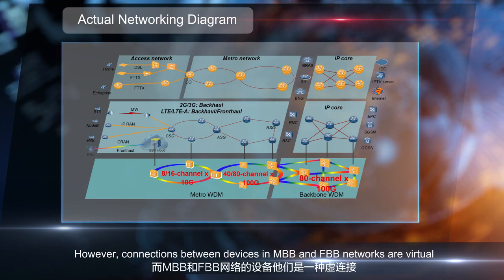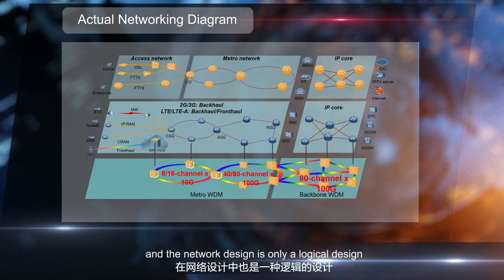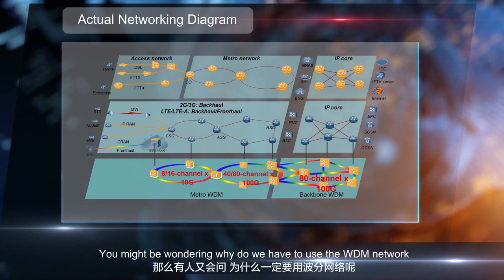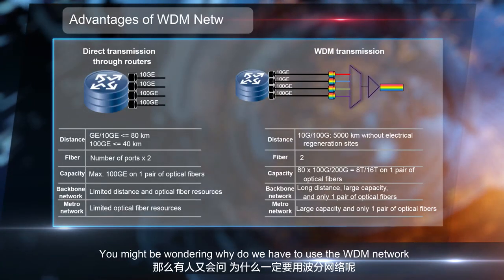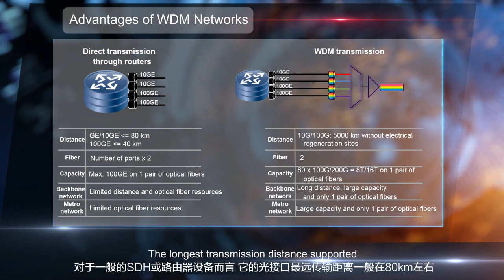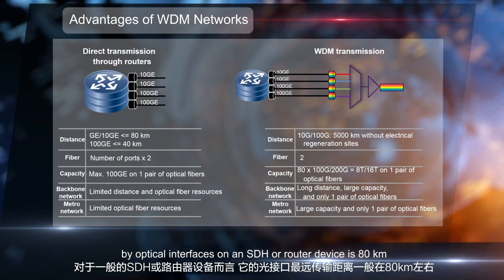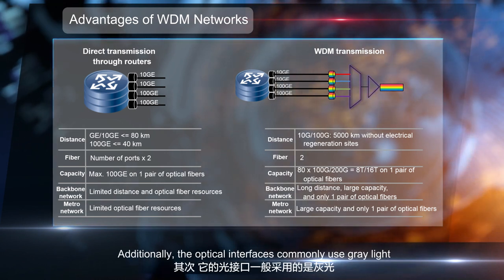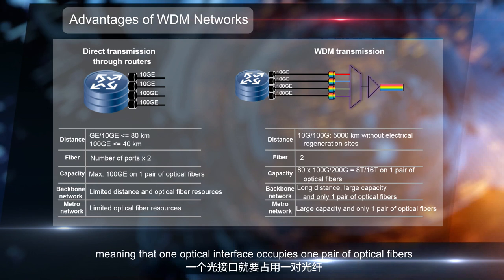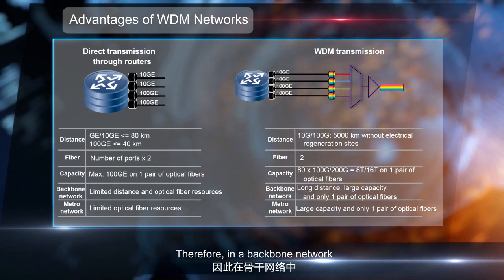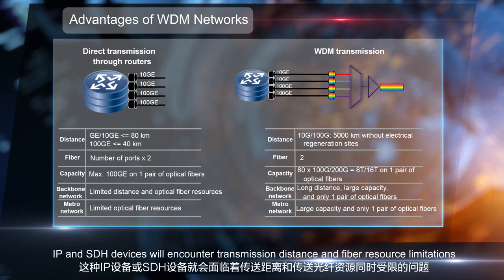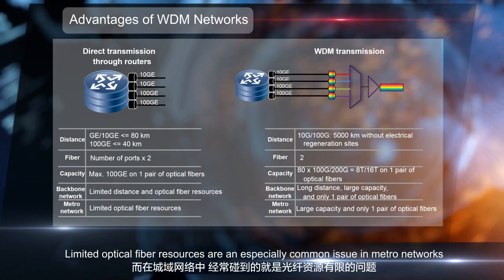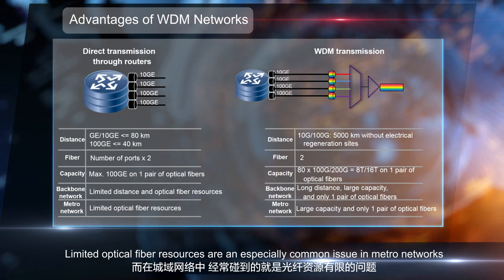However, connections between devices in MBB and FBB networks are virtual, and the network design is only a logical design. You might be wondering: why do we have to use the WDM network? The longest transmission distance supported by optical interfaces on an SDH or router device is 80 kilometers. Additionally, the optical interfaces commonly use gray light, meaning that one optical interface occupies one pair of optical fibers. Therefore, in a backbone network, IP and SDH devices will encounter transmission distance and fiber resource limitations. Limited optical fiber resources are an especially common issue in metro networks.